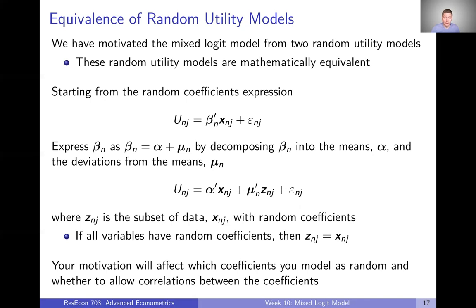Even though — and because — they're equivalent, no matter which way we think about this, we get the same choice probabilities and the same flexible substitution patterns. However, depending on whether you think about this as individual-specific random coefficients or flexible substitution patterns, that can affect how you want to define your model: what data should have random versus fixed coefficients, and whether you want covariances among the random coefficients. Ken Train talks through this in more detail in the book.